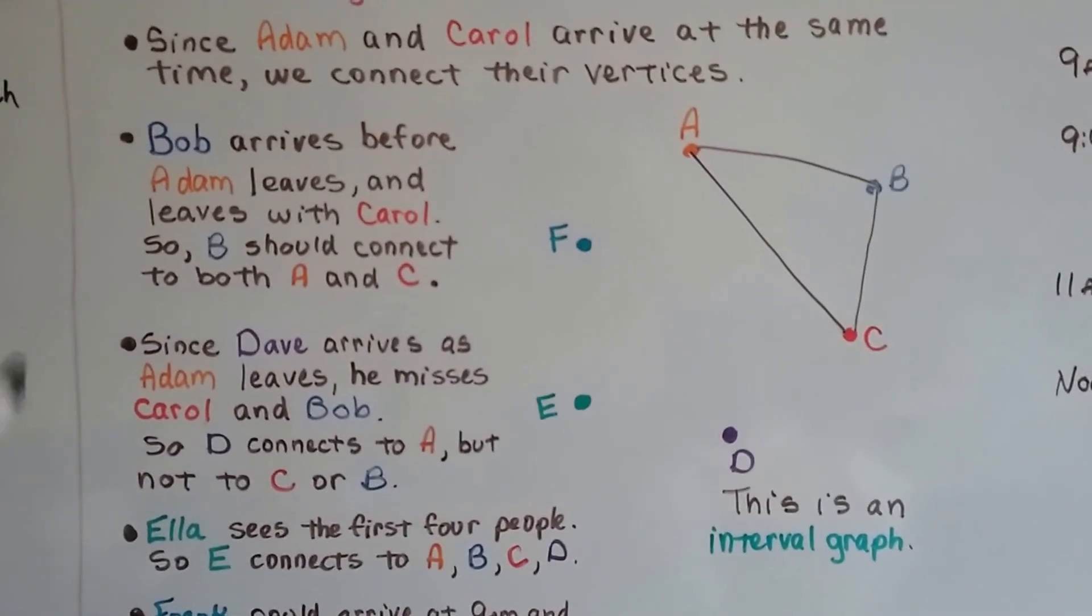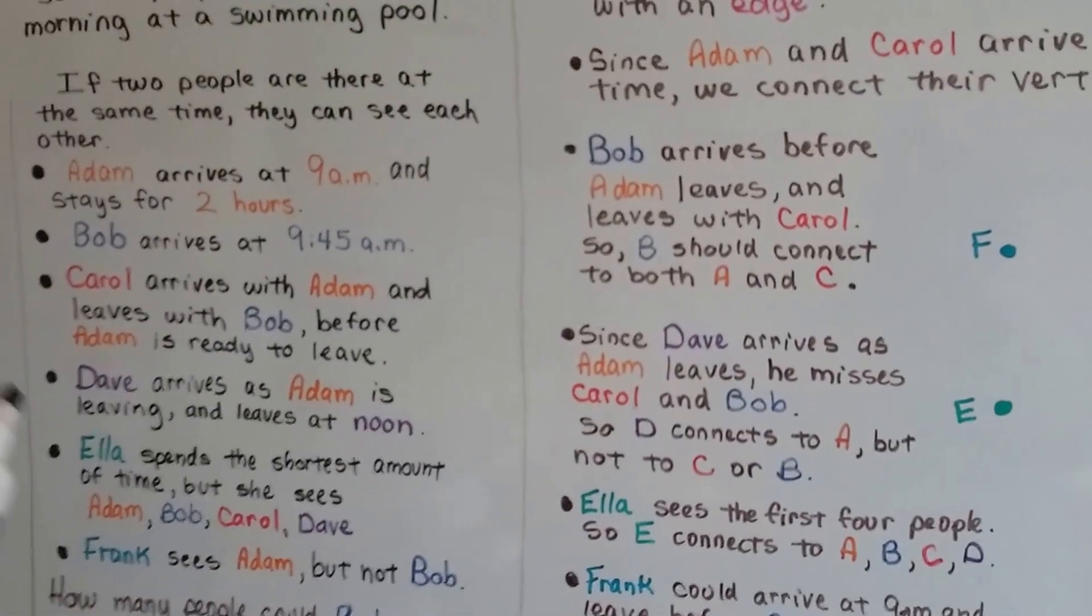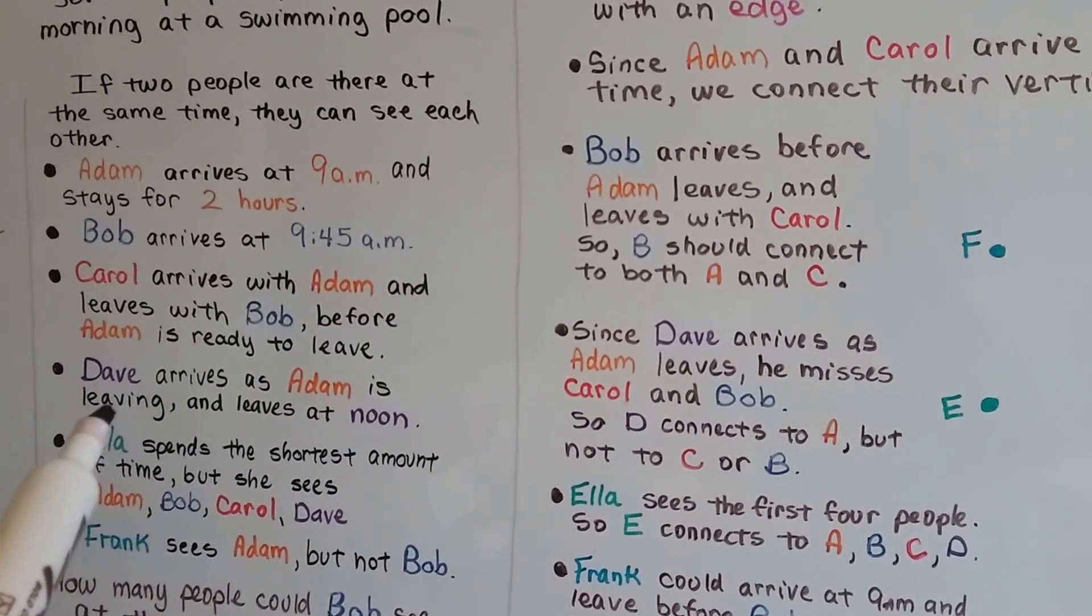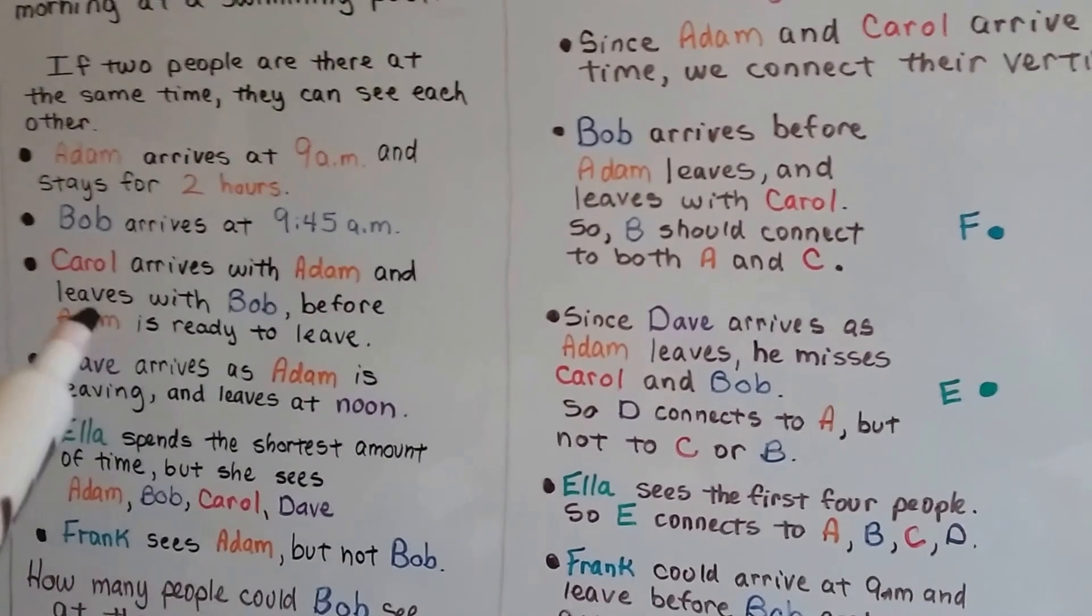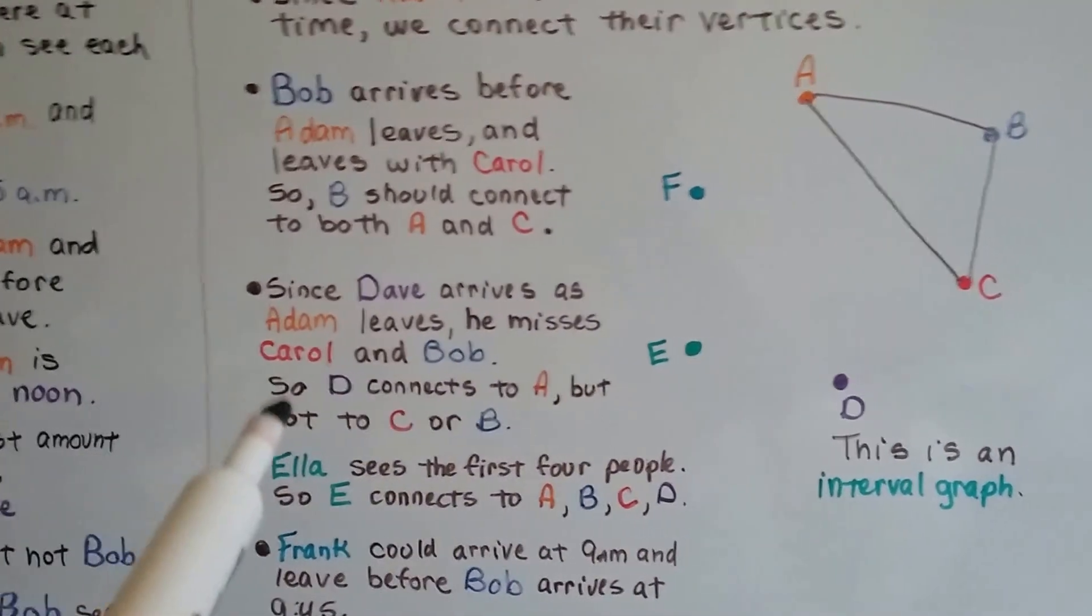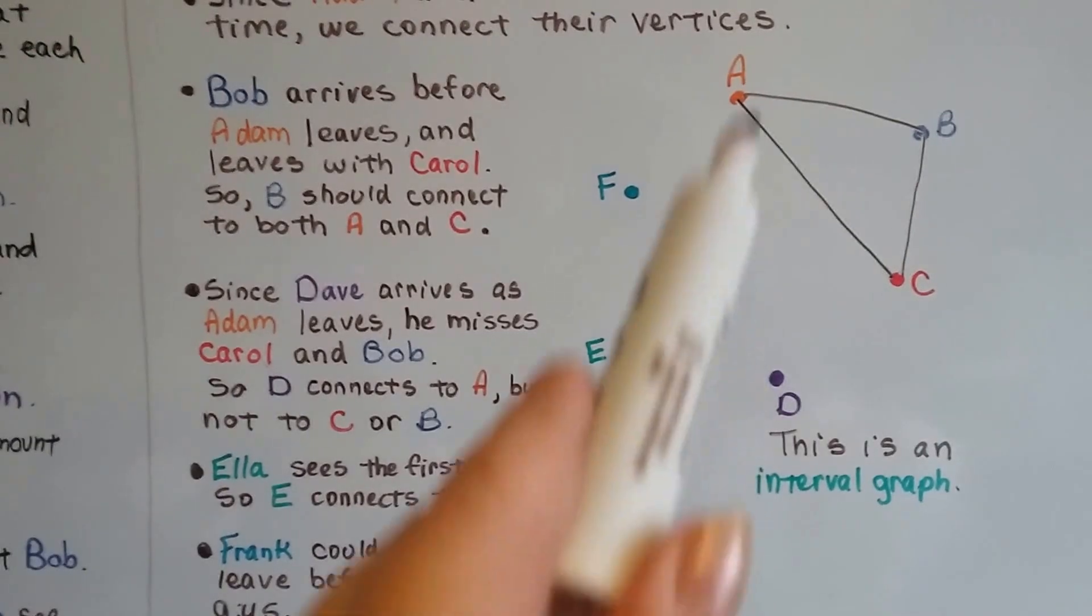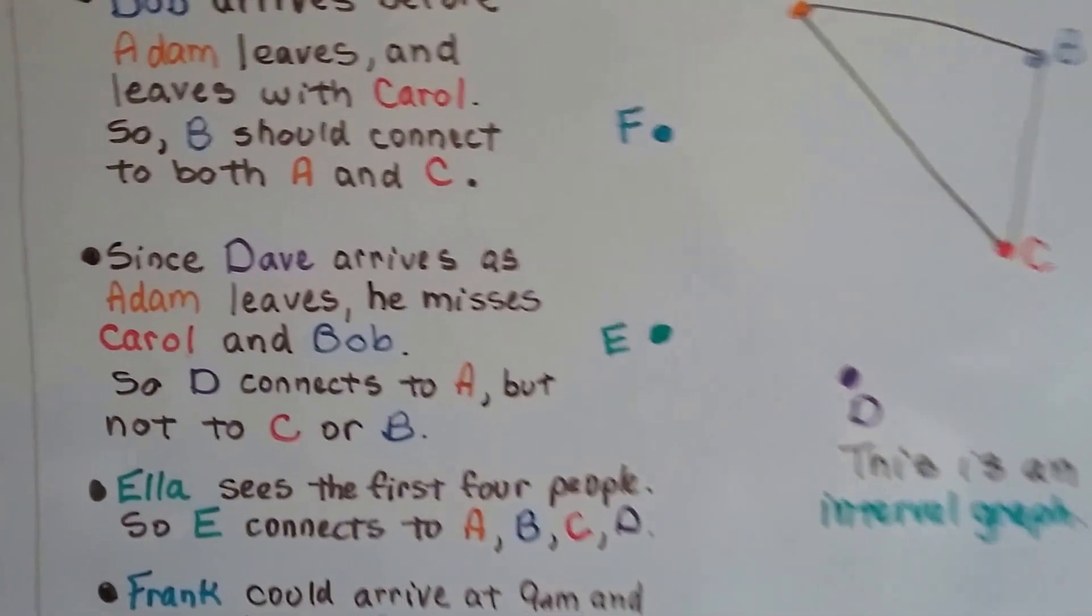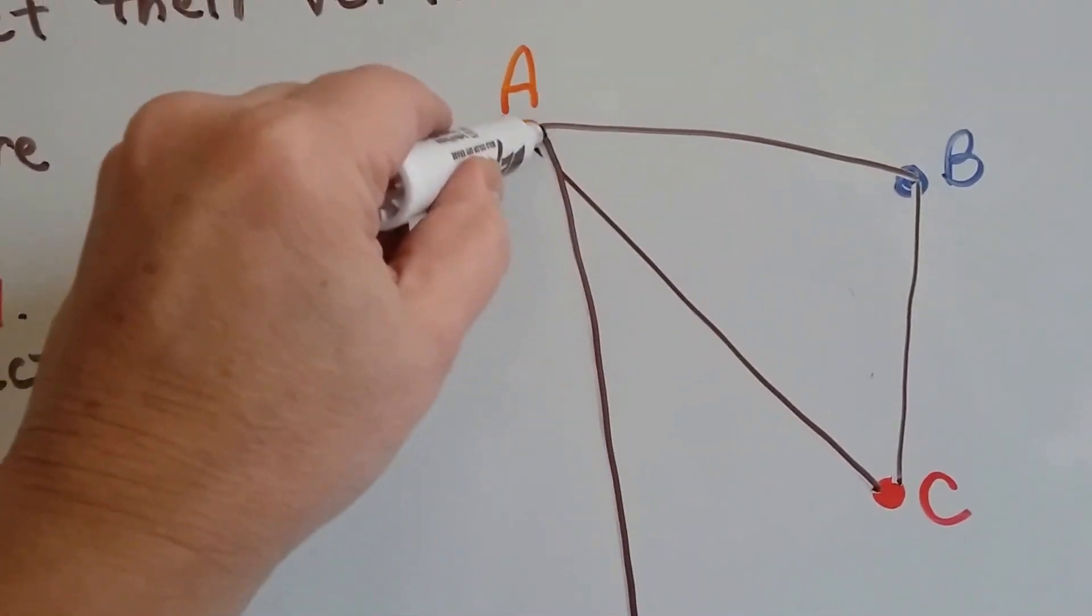Since Dave arrives as Adam leaves, he misses Carol and Bob. Dave arrives as Adam is leaving. Carol and Bob left early, before 11, before Adam did. So Dave missed them. So D, Dave, is going to connect to A, Adam, because he was still there at 11, but it's not going to connect to C or B for Carol or Bob. D is going to connect to A.